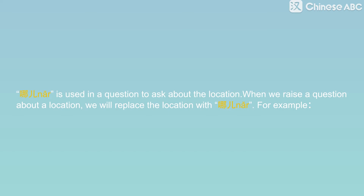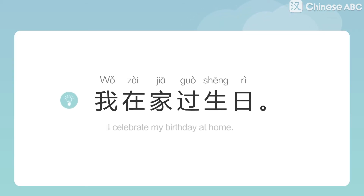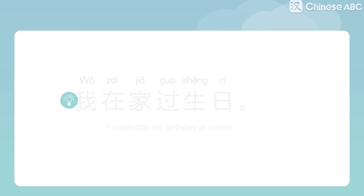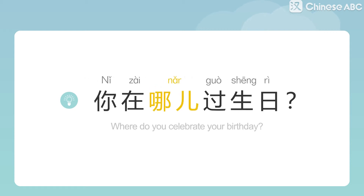哪儿 is used in a question to ask about the location. When we raise a question about a location, we replace the location with 哪儿. For example: 我在家过生日. 你在哪儿过生日?